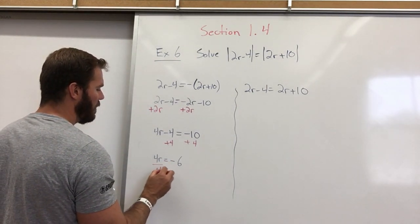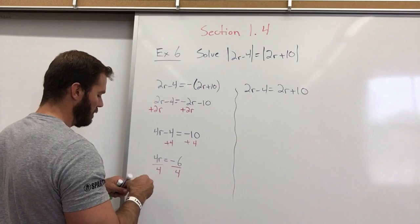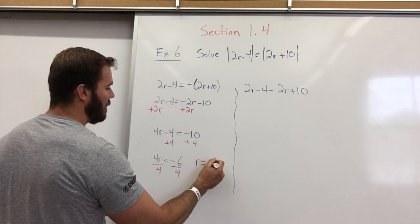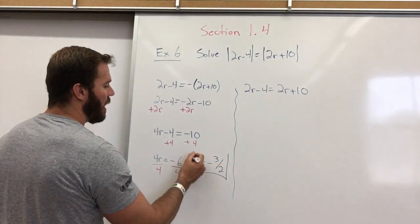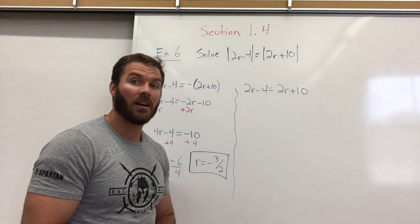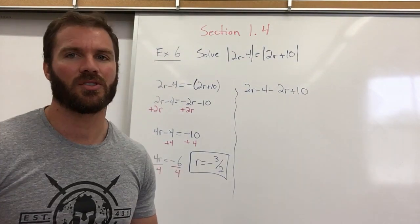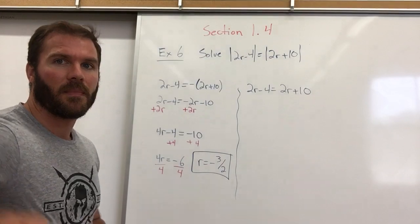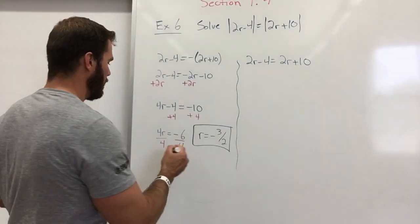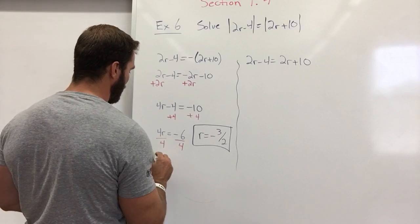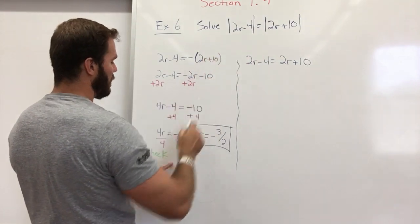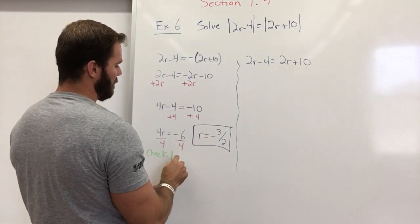Now we're going to divide by 4. And r is going to equal negative 3 halves. I have to check this though to see that it's a real solution and not just an extraneous solution. I need to move that downward. So we're going to check. Let's plug in this into the original equation.